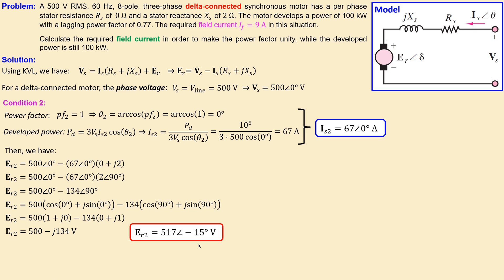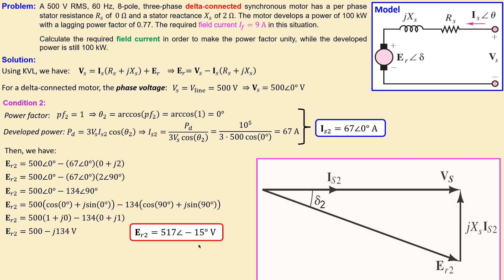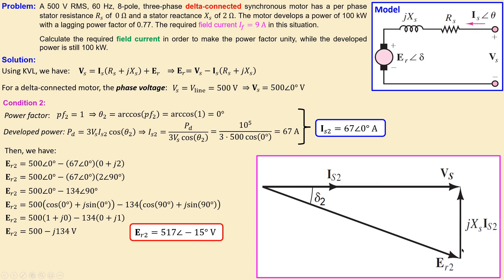Looking at the phasor diagram for condition two, the stator current is in phase with the phase voltage, which is required for unity power factor. The phase voltage is 500 volts, the stator current is 67 amps, and theta two is zero degrees. The back EMF is now 517 volts — larger than the phase voltage. The torque angle is minus 15 degrees, and the voltage across the reactance is 134 volts.